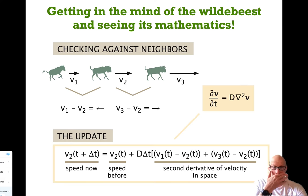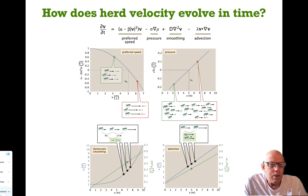What we learned is that there's a term here which is a smoothing term, or democratic smoothing, where a wildebeest checks in with its neighbors. I'm going to go into this in more detail in the final vignette about herding, and then students will have a chance to think about it in the context of homework.